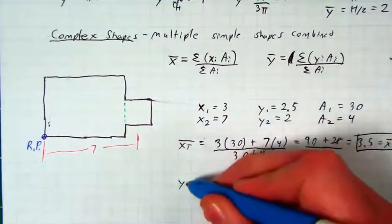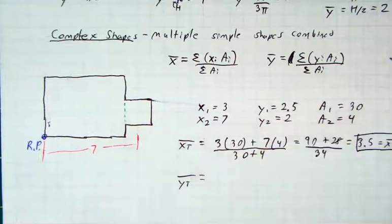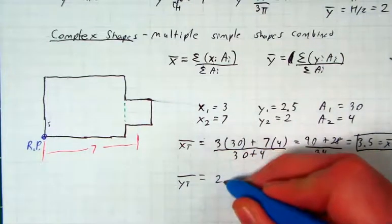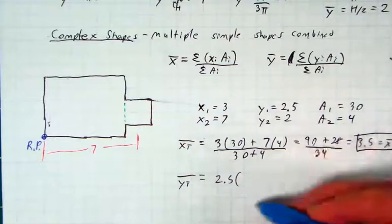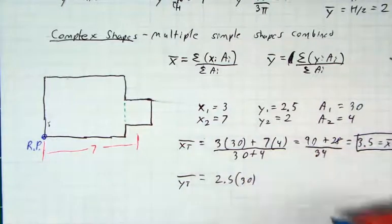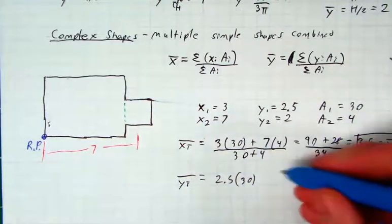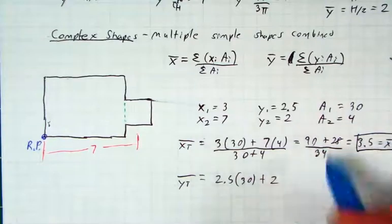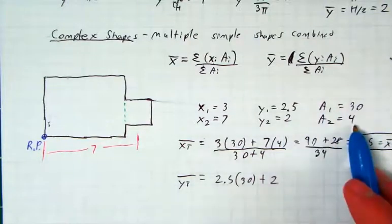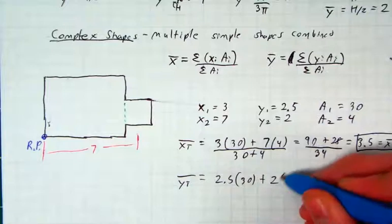We do the exact same thing for our y total. In this case, your y1 is 2.5 multiplied by the individual area for shape one, which is still 30. It hasn't stopped being 30. This time, your y2 is 2 multiplied by its individual area, which is 4. Very good.